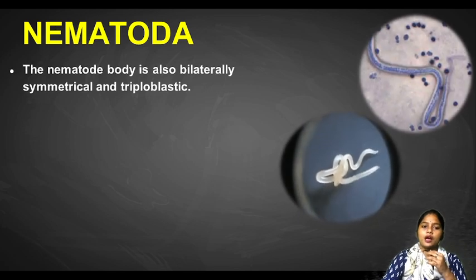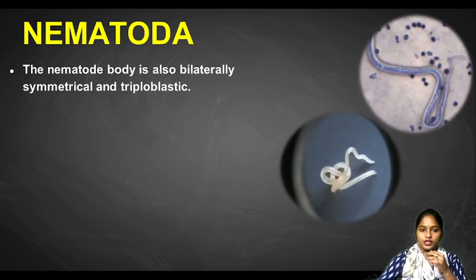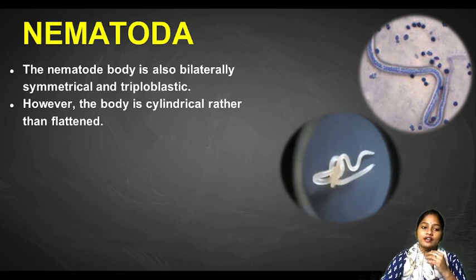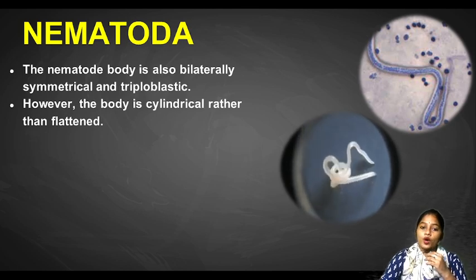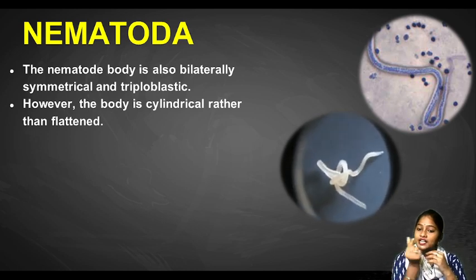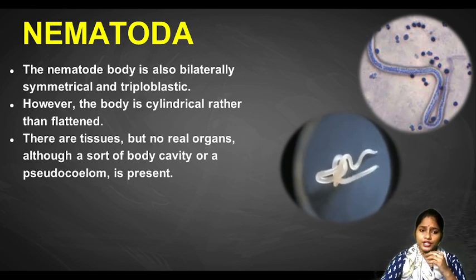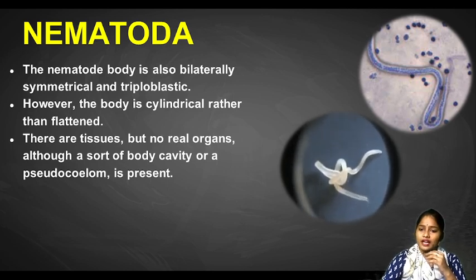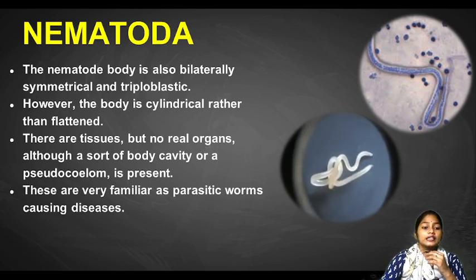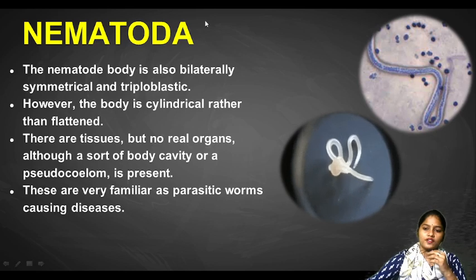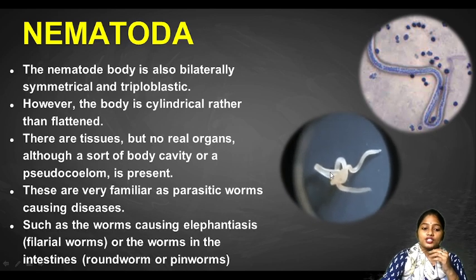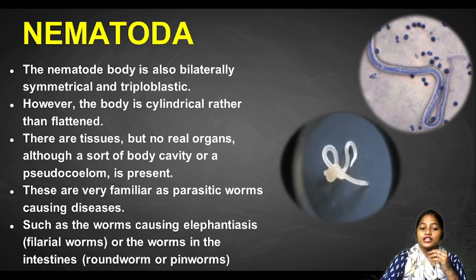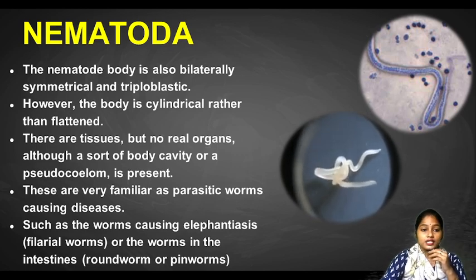Next is Nematoda. Their body is also bilaterally symmetrical and triploblastic — three layers, with right and left sides equal. However, the body is cylindrical rather than flattened. They have tissues but no real organs, and a pseudo-coelom or false body cavity is present. These are commonly parasitic worms causing diseases, such as the filarial worm causing elephantiasis and filariasis, and roundworms or pinworms found in the intestine.